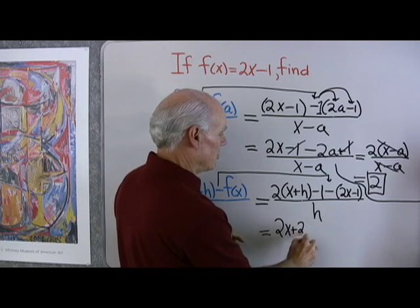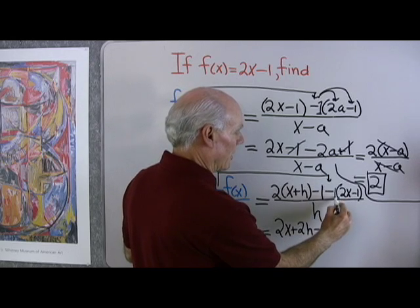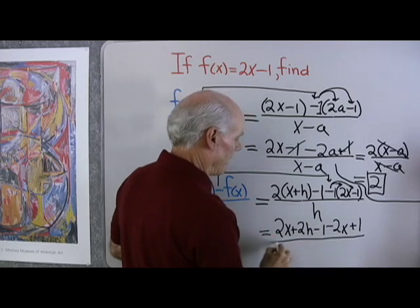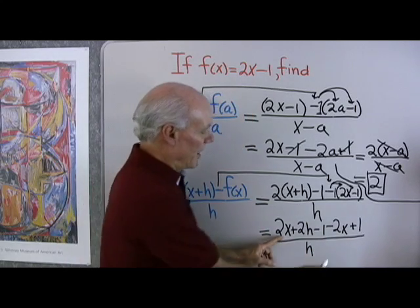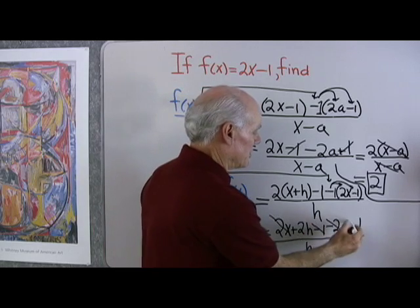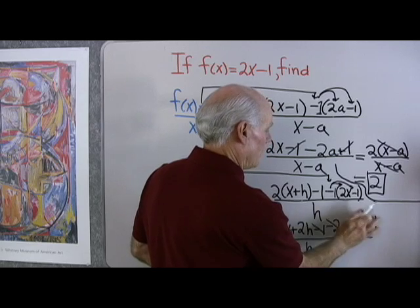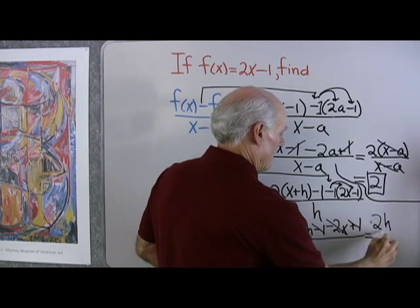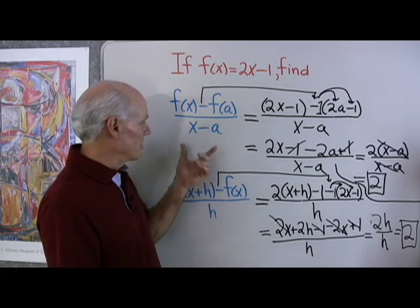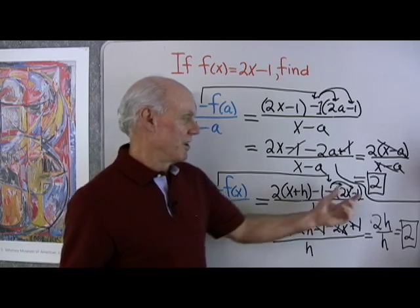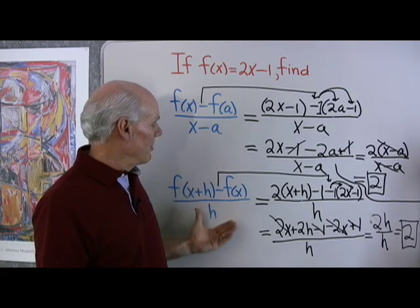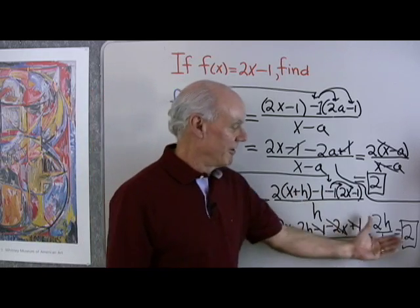Simplifying: 2x plus 2h minus 1. Now again, negative 1 times 2x gives minus 2x; negative 1 times negative 1 gives positive 1. All divided by h. 2x and negative 2x add to 0; negative 1 and positive 1 add to 0. I end up with 2h divided by h, so that also comes out to be 2. That's no coincidence — these are two formulas, two ways to represent the same thing. They're formulas you'll see if you go on to take a calculus class.